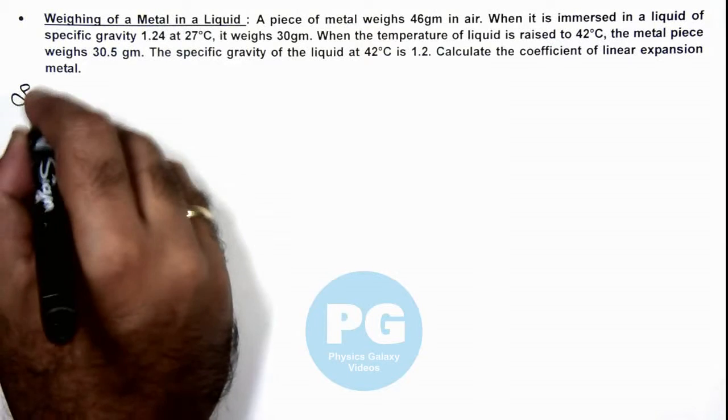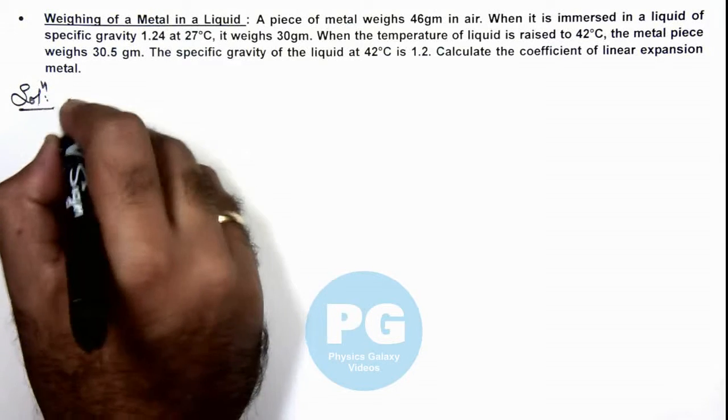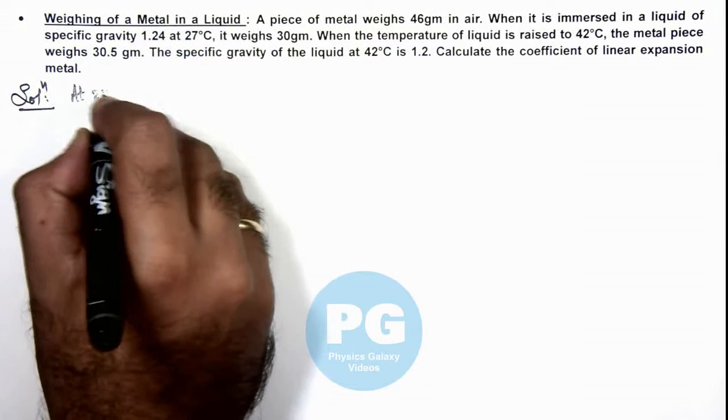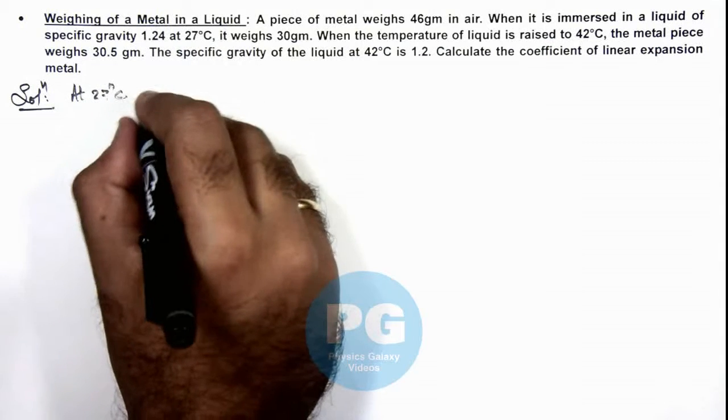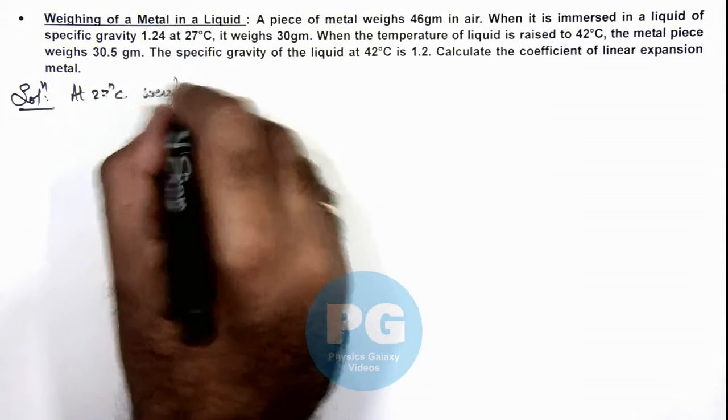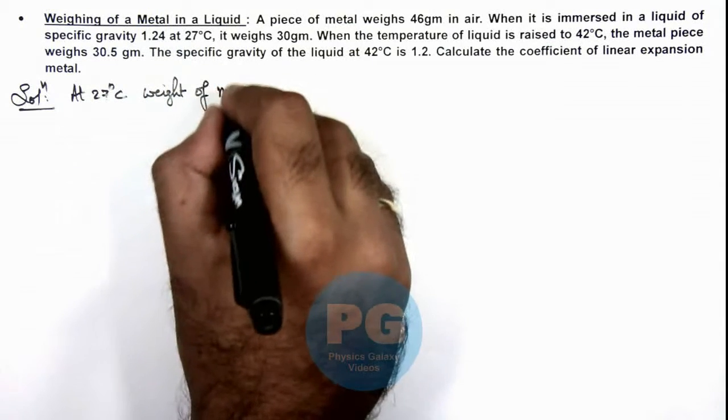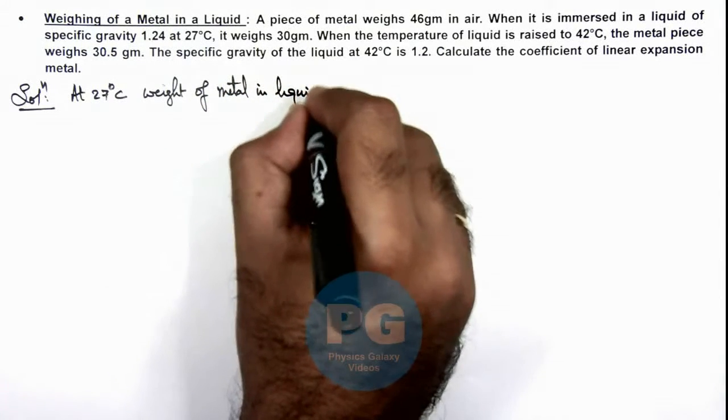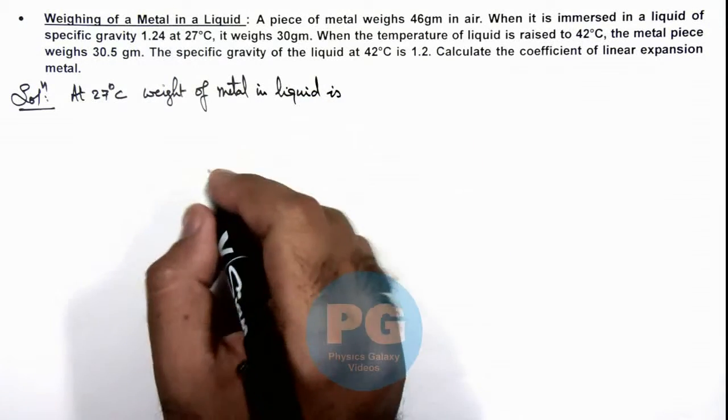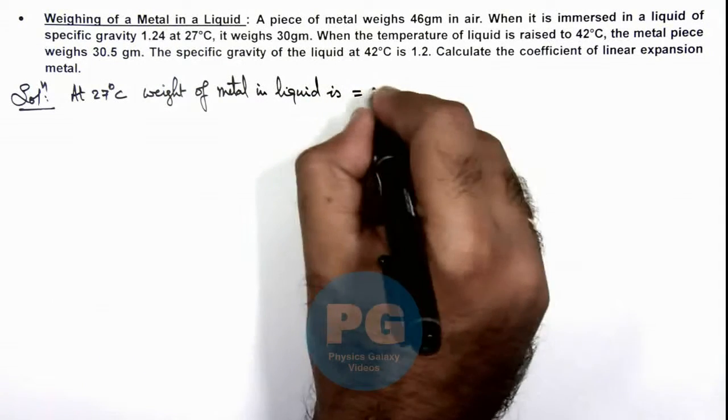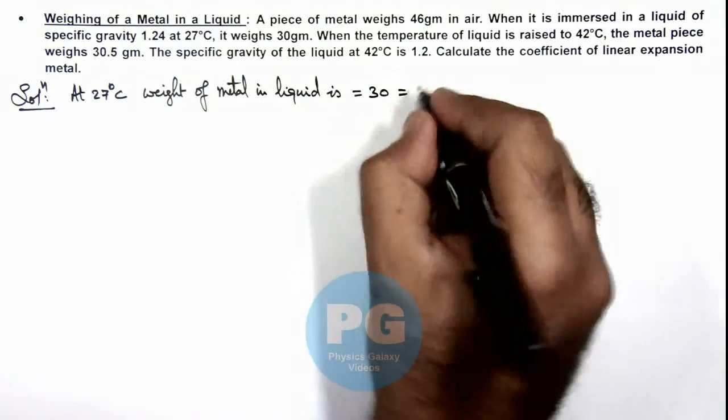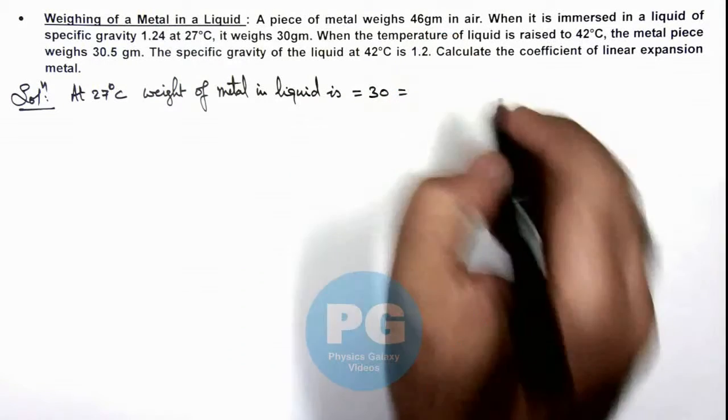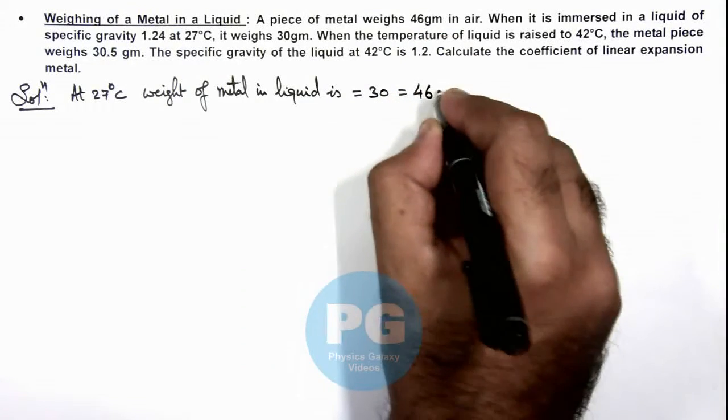So in the solution, we can write: at 27 degrees Celsius, weight of metal in liquid is 30 grams, and this should be equal to its actual weight, 46 grams, minus the buoyant force on it.